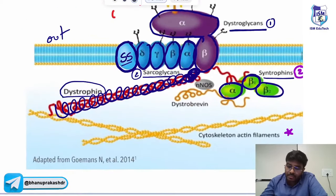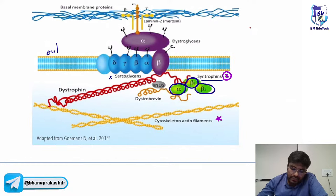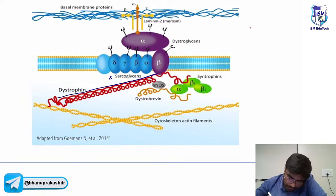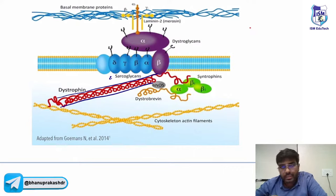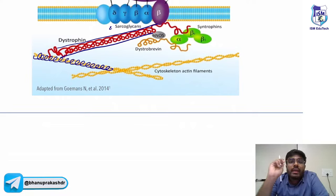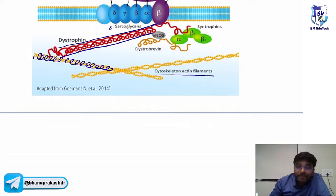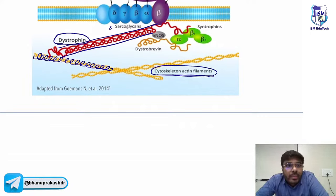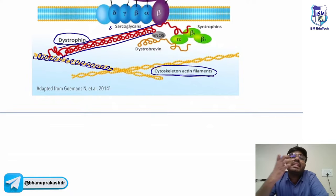Concentrate on dystrophin — this is very important. Dystrophin is a peripheral protein. Within the cell, dystrophin is attached with cytoskeletal actin. It gives tensile strength to the muscle and maintains the shape and structure of the muscle. Dystrophin is attached with cytoskeletal actin and gives tensile strength to the muscle.